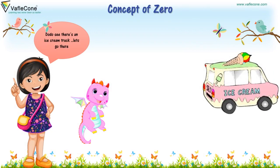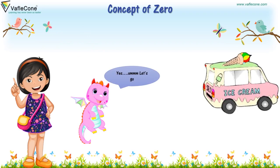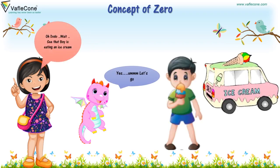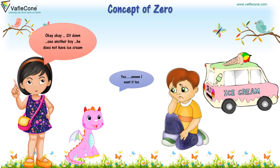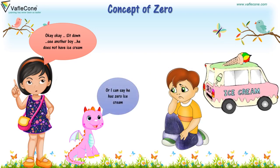See there is an ice cream truck. Let's go there. Dodo, wait. See, that boy is eating an ice cream. I want it too. See another boy — he does not have any ice cream. Or, I can say, he has zero ice cream.